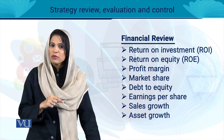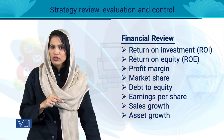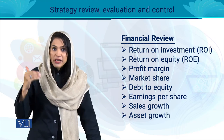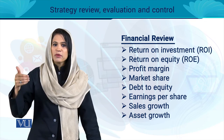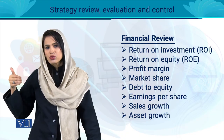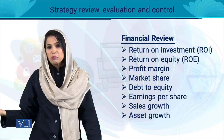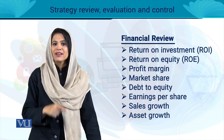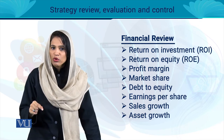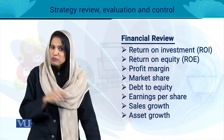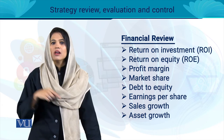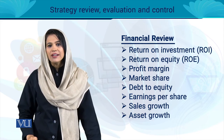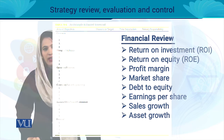अगर कोई indicator आपके standards के मताबिक नहीं है, तो इसका मतलब है corrective action की जरूरत है। अगर आपके assets बिकना शुरू हो गए हैं बजाए इसके कि production house की facility बढ़े, तो corrective action लेने का वक्त आ गया है। अगर आपका market share shrink हो रहा है, it means आपकी strategy काम नहीं कर रही - corrective action या strategy change का time आ गया है।